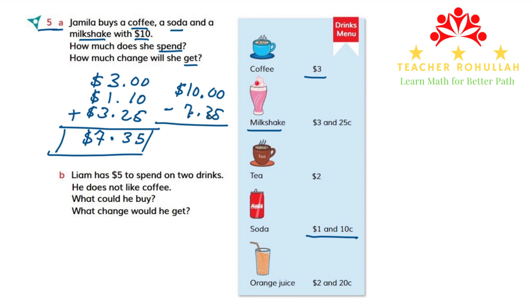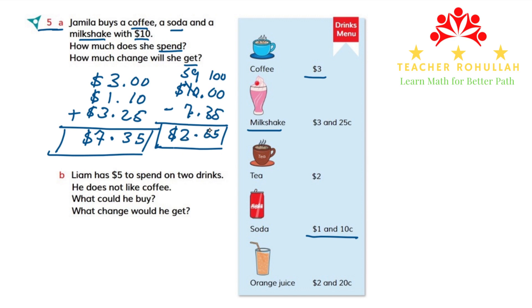We cannot subtract 35 cents from zero cents, so we have to borrow from $10. If we borrow, $9 will be left here, and we will have 100 cents over here because $1 is equal to 100 cents. Now 100 cents minus 35 cents will be 65 cents. We bring down the decimal point. $9 minus $7 will give us $2. So the amount that she gets back as change is $2.65.